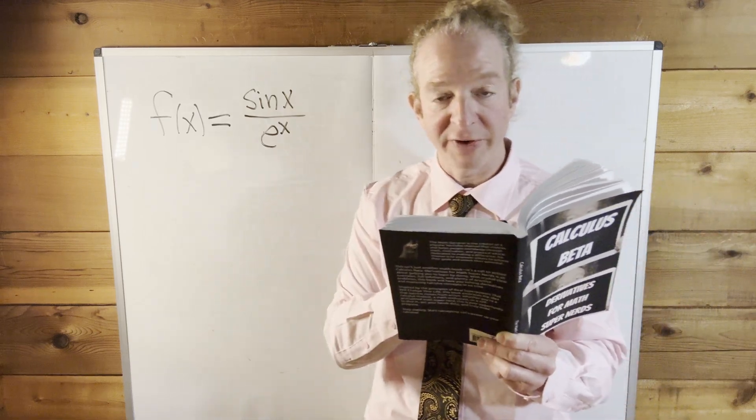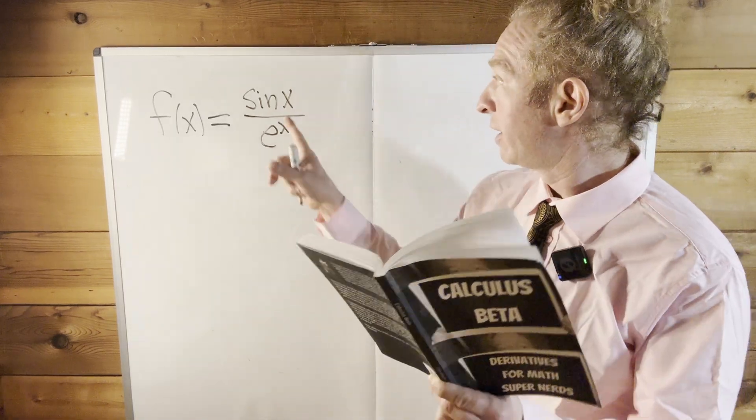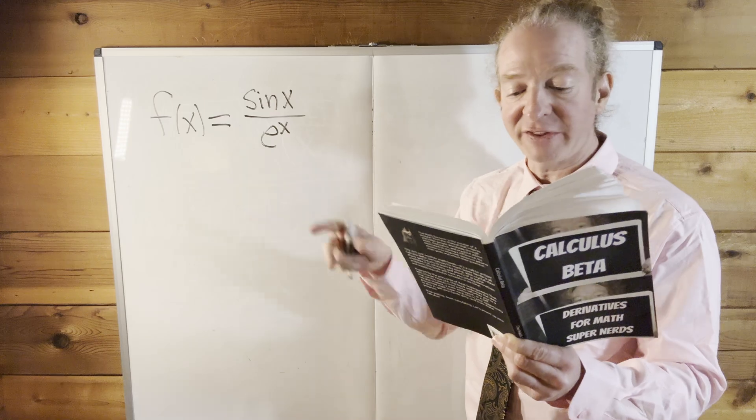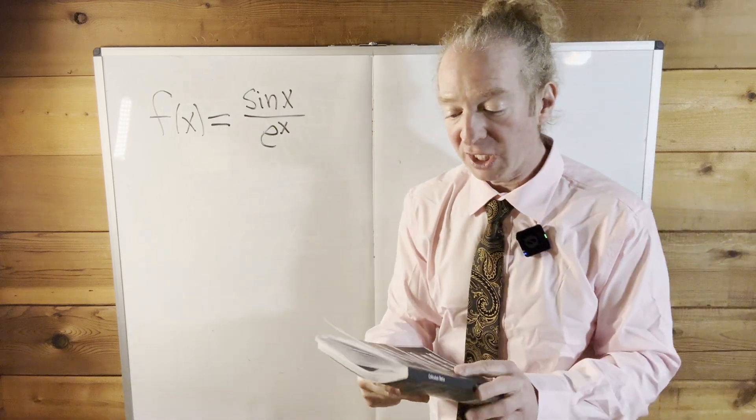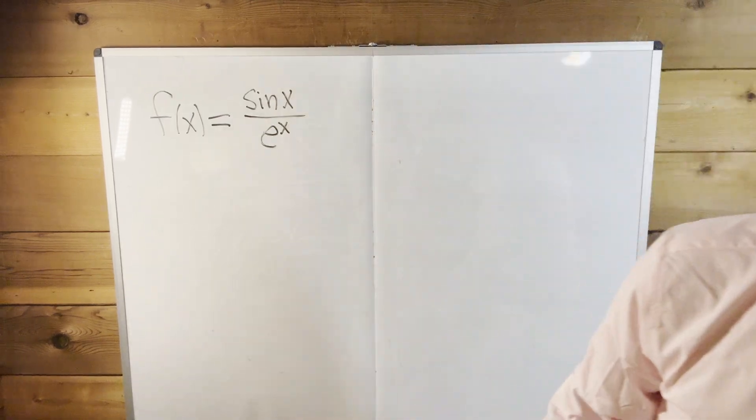Hi, in this video we're going to find a derivative. We're going to find the derivative of the sine of x over e to the x, and we're going to use the quotient rule. This is from my book Calculus Beta.